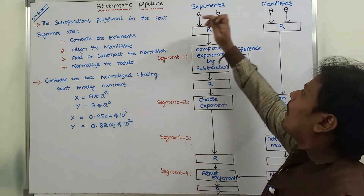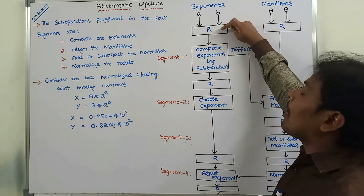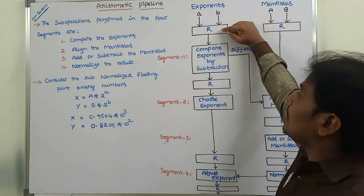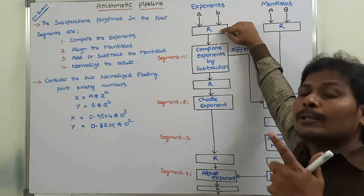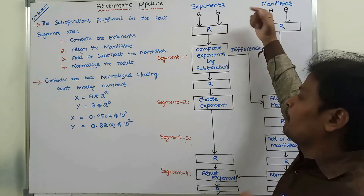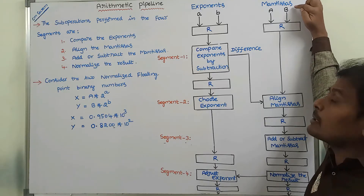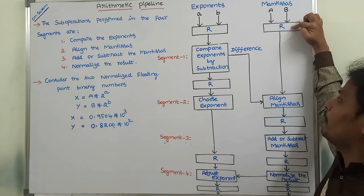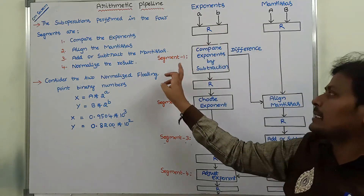Small a and small b are called as exponents. These exponent values are stored in the temporary register capital R. This register is used for storing the exponent values and also storing the intermediate results if any. Capital A and capital B are called as mantissas. These mantissas are stored in the register capital R. After that, this result can be sent to segment 1.